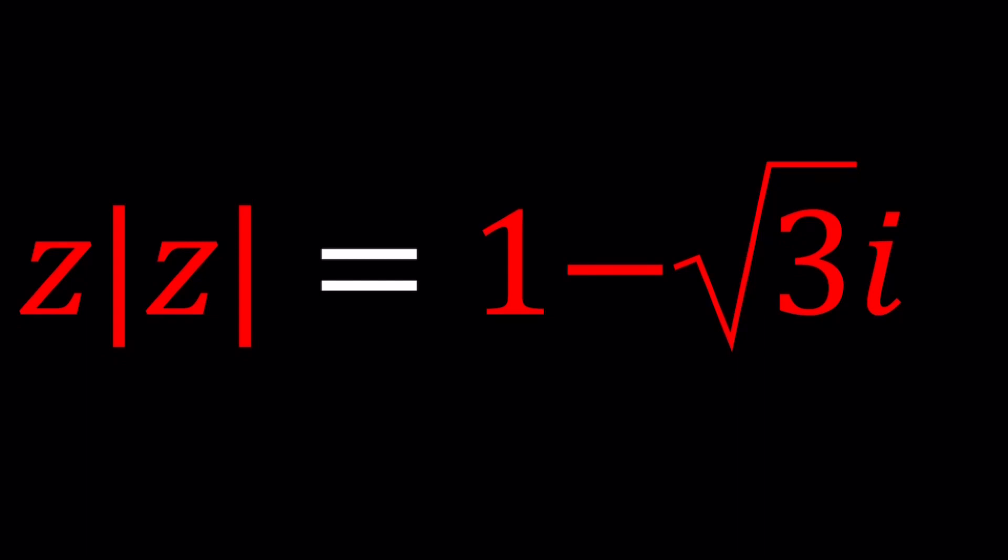Z is a complex number, I guess needless to say, because this channel is all about complex numbers. Alright, I'll be presenting two methods, and let's start with the first one.